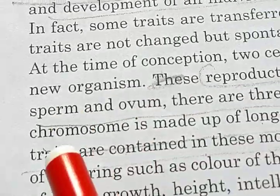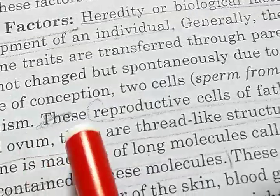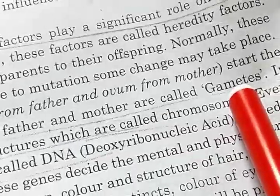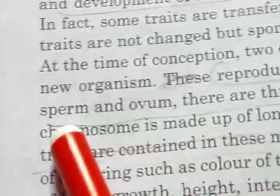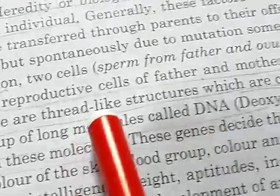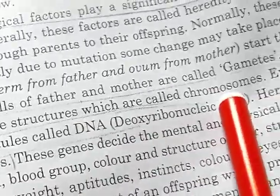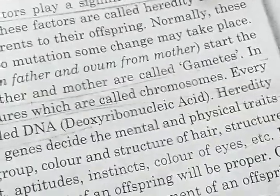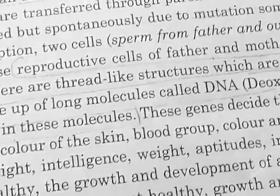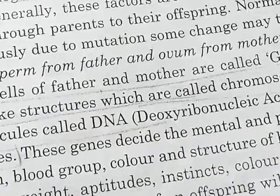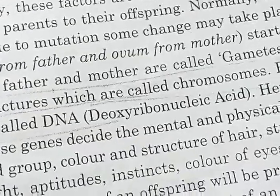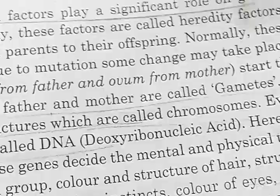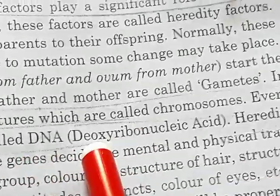At the time of conception, two cells — the sperm from the father and the ovum from the mother — are called gametes. Inside the gametes there are thread-like structures called chromosomes. Every chromosome is made up of long molecules called DNA. The full form of DNA is deoxyribonucleic acid — you should learn this full form, especially commerce students.